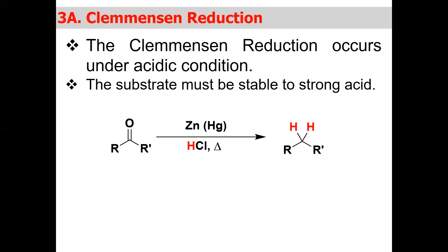In Clemmensen reduction, it occurs under acidic conditions. Compounds which are base-labile or base-sensitive can be converted into alkane using Clemmensen reduction because the substrate must be stable to strong acid. We use amalgamated zinc — also known as zinc in mercury — and in the next step reduce with HCl under heat; the carbonyl compound is converted into the alkane. The proton from the acid converts the ketonic group into the alkane.